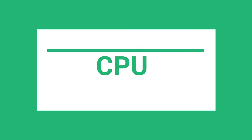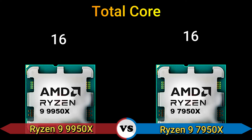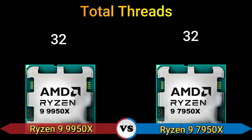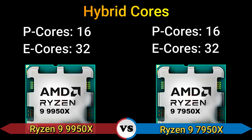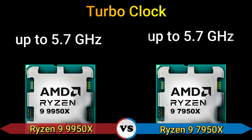CPU total cores: 16. Total threads: 32. Hybrid code performance cores: 16 equals 32. Base frequency: 4.3 GHz and 4.5 GHz. Turbo clock: up to 5.77 GHz.